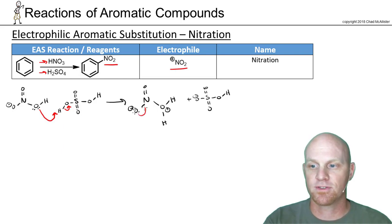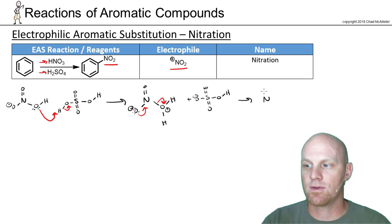So it turns out these electrons come down at the same time as the water breaks off and leaves. And that's actually where we form our electrophilic species. So now we've got NO2 with a positive formal charge right there. And we also just formed a water molecule.